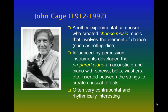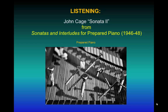Cage's music was often very contrapuntal and rhythmically interesting. He wrote several works for his prepared piano, and one of the best known is his Sonatas and Interludes for Prepared Piano, written between 1946 and 1948. The piece is intended to express eight permanent emotions found in the Rasa aesthetic theory of Indian tradition. Many of the pieces are in binary form, such as Sonata No. 2. The structure of each sonata is determined by a sequence of natural numbers and fractions, creating a high level of complexity. Cage also gave specific instructions on how to prepare the piano, specifying that 45 specific notes were to be prepared with metal screws or bolts, as seen in the photo.